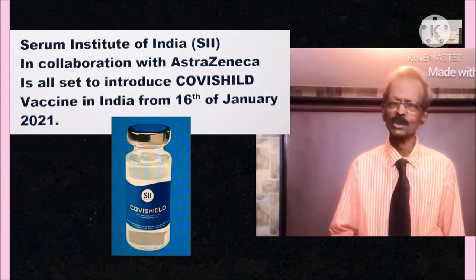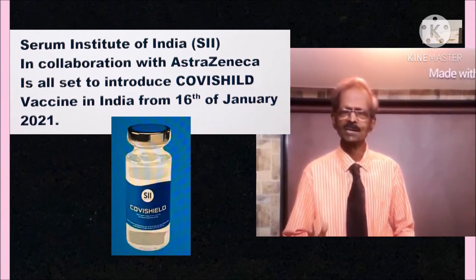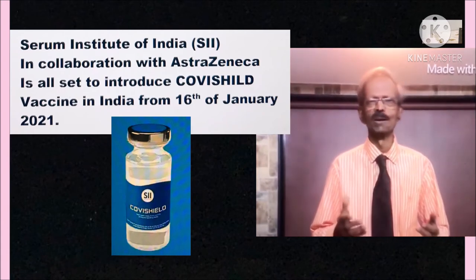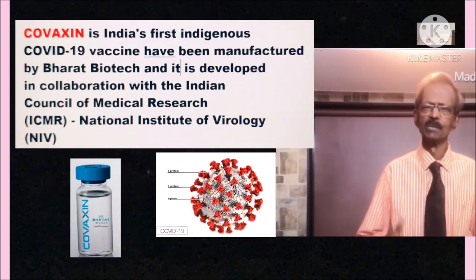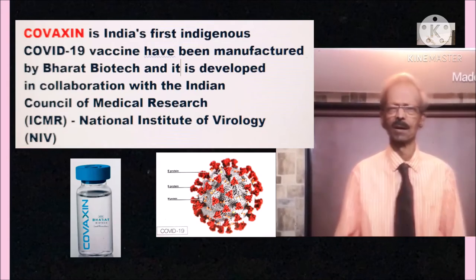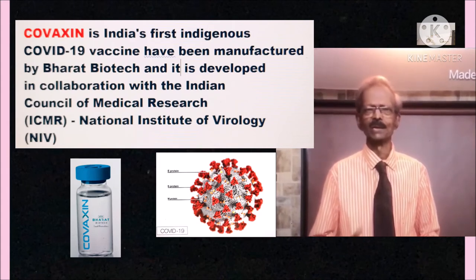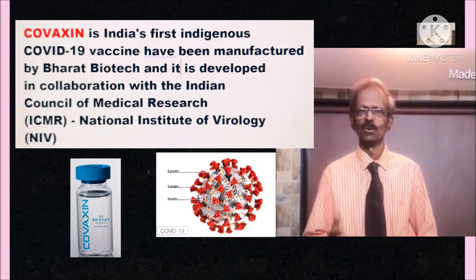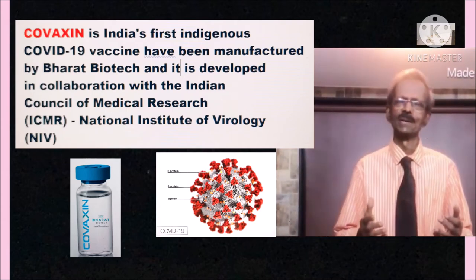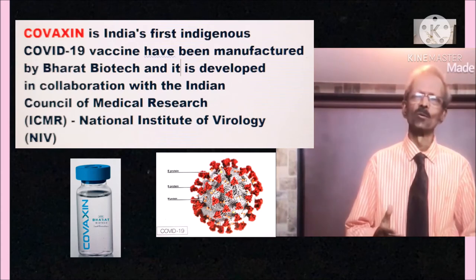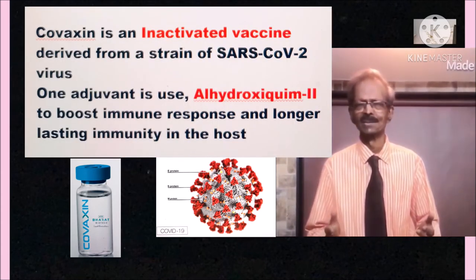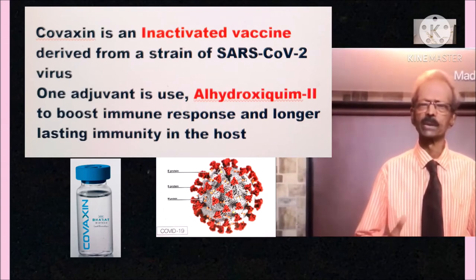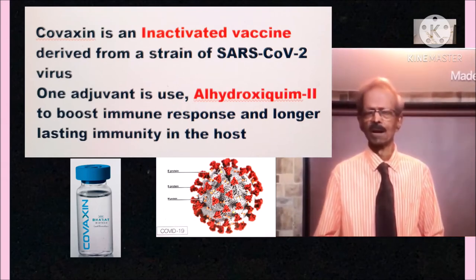The Serum Institute of India, in collaboration with AstraZeneca, is set to introduce the COVID-19 vaccine in India from 16th January 2021. India's first indigenous COVID-19 vaccine, Covaxin, has been manufactured by Bharat Biotech in collaboration with the Indian Council of Medical Research (ICMR) and the National Institute of Virology. Covaxin is an inactivated virus derived from a strain of COVID-19 virus, with the adjuvant alhydroxiquim-2 used to boost immune response and longer-lasting immunity.